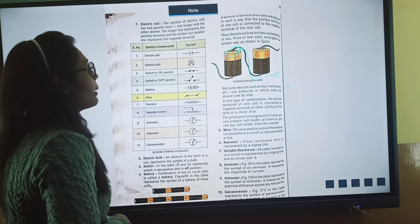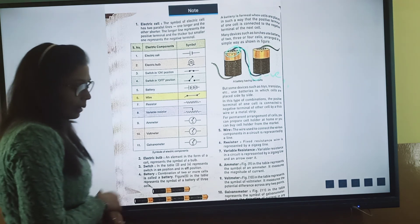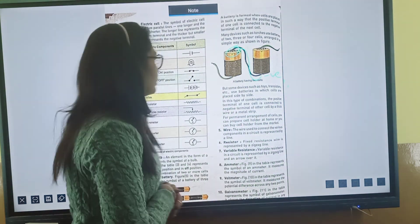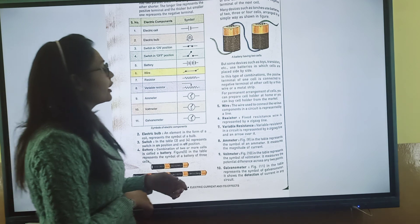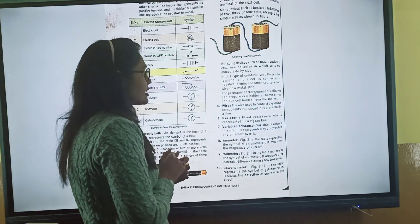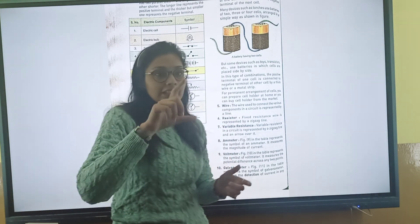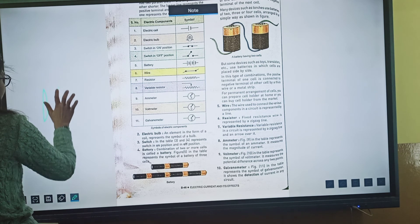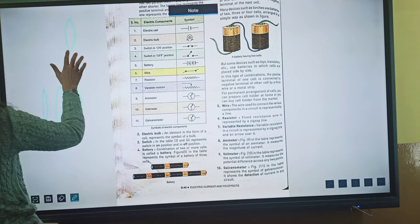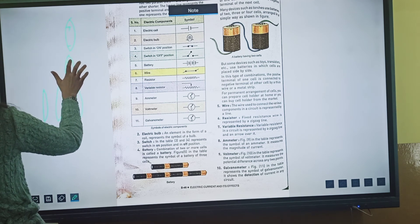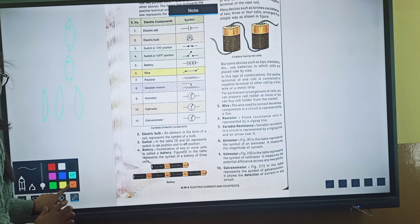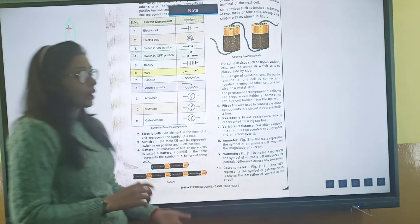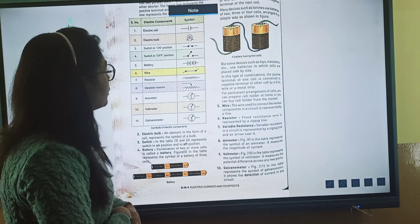Many devices such as torches use batteries with two, three, or four cells arranged together. In remotes and torches, positive and negative terminals are combined in series. But some devices like toys use batteries where cells are placed side by side individually. In torches and remote controls, cells are arranged positive-to-negative in sequence. When positive and negative terminals are connected, they form a battery.